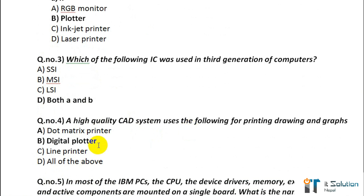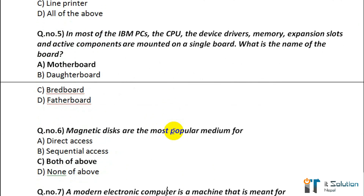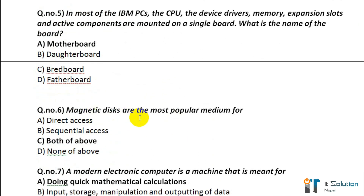Question number 5: In most IBM PCs, the CPU, device drivers, memory expansion slots, and active components are mounted on a single board. What is the name of that board? Its correct answer is motherboard. Question number 6: Magnetic disks are the most popular medium for — its correct answer is option C, both of the above.